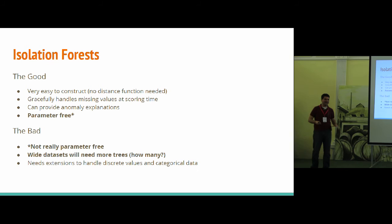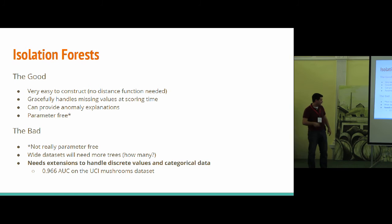The other nice thing is they're parameter free. The bad thing is that's kind of a lie and they're not really parameter free. What I mean there is in the original paper, the authors are like, hey, take 256 samples, take 100 trees, and it works pretty well. And in fact, in all these benchmarks, that's what was done. It was never optimized. The other anomaly detectors use cross validation to optimize the parameters. Isolation forests still look good. So they are robust. They don't really need to be optimized much with those parameters. But still, if you have things like really wide data sets, you're going to need more trees. How many? It's tough to say. And the final thing is that if you want to use these with more real world data sets, you do need extensions to handle discrete values and categorical data. It's not too hard to do that, but if you do, it can actually still do all right. Like on the UCI mushroom data set, we had a 0.966 AUC, which was pretty good.